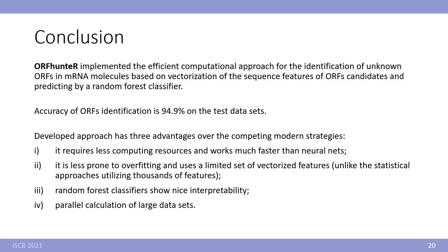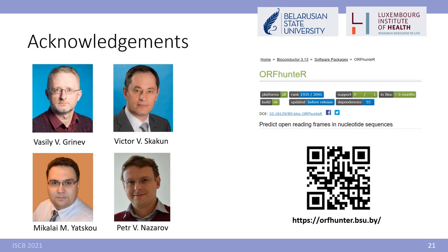In conclusion, I want to say that we implemented an efficient computational approach for identification of open reading frames in mRNA molecules based on vectorization of sequences and random forest classifier. The accuracy on test set is 94.9%. Our advantages are that it requires less computing resources and works much faster than neural networks. To prevent overfitting our vectorized features help. And the random forest classifier has nice interpretability. And we implemented parallel calculations for large datasets. I would like to say thanks to all our team and thank you for your attention.